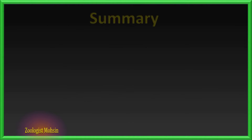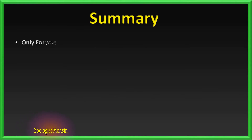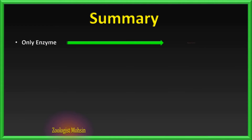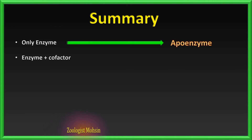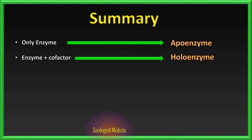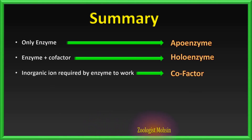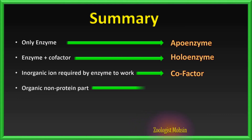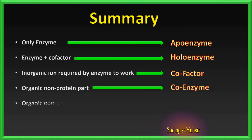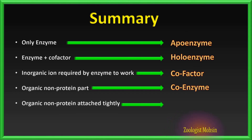Let's summarize the definitions one more time. Enzyme alone: apoenzyme. Enzyme plus cofactor: holoenzyme. Inorganic ion required by enzyme to work: cofactor. Organic non-protein part: coenzyme. And organic non-protein part tightly attached: prosthetic group.